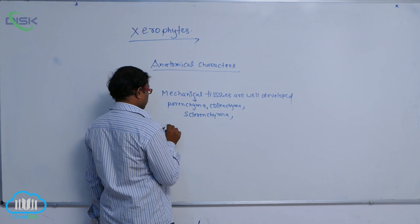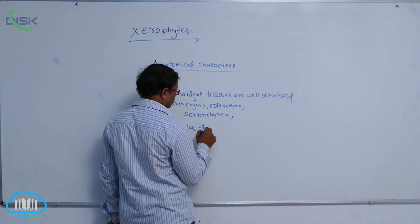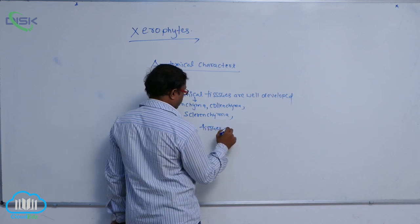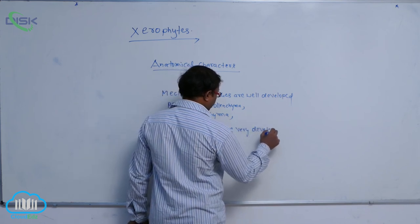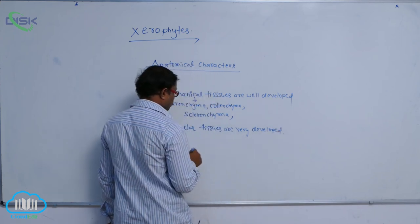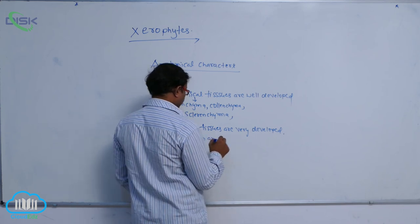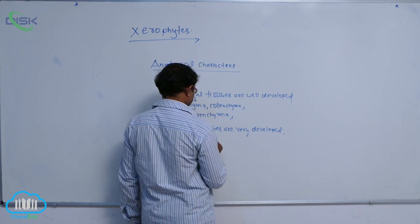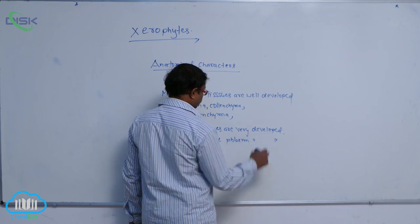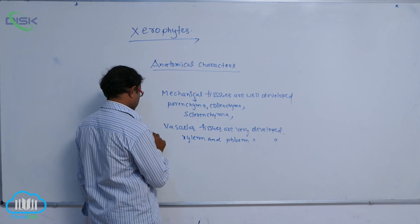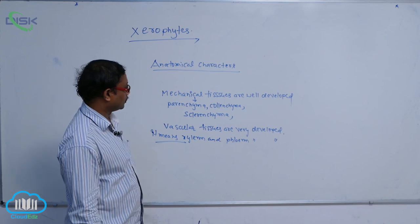After that, vascular tissues are well developed. These vascular tissues - what are the xylem and phloem? Xylem and phloem are well developed.